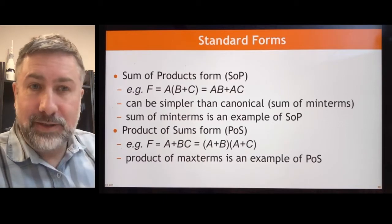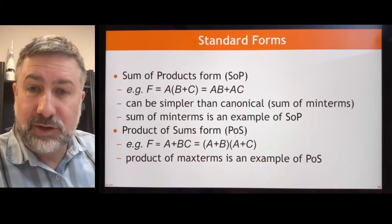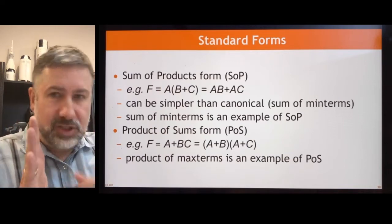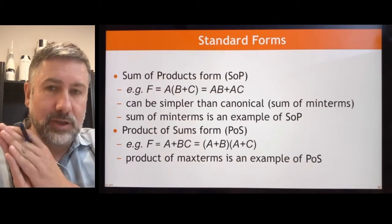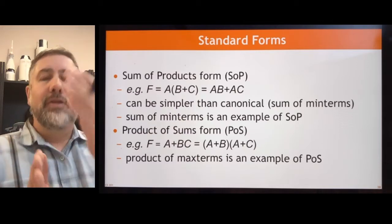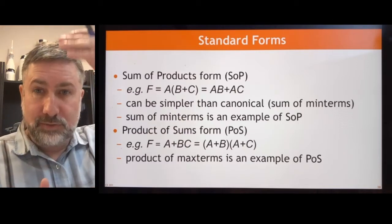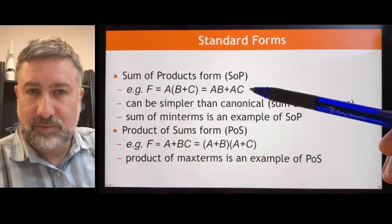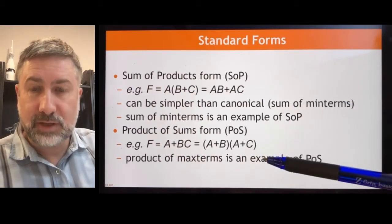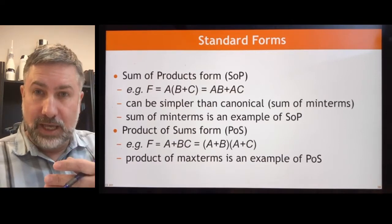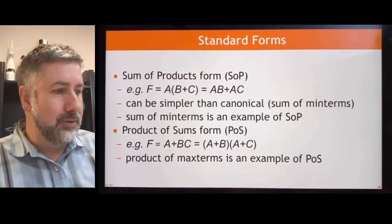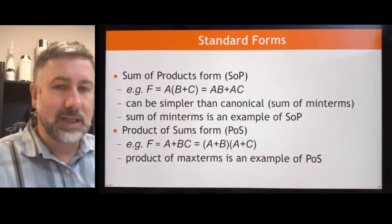You can implement these standard forms fairly straightforward with three levels. You have one level that will invert some of the variables if you need the complement of those variables. Then you have a level which is a whole bunch of one type of gate. There would be a bunch of AND gates for the sum of products or a bunch of OR gates for the product of sums. And then the output of all of those individual term gates would be into one big summation gate at the end that would be ORing them all together or ANDing them all together.